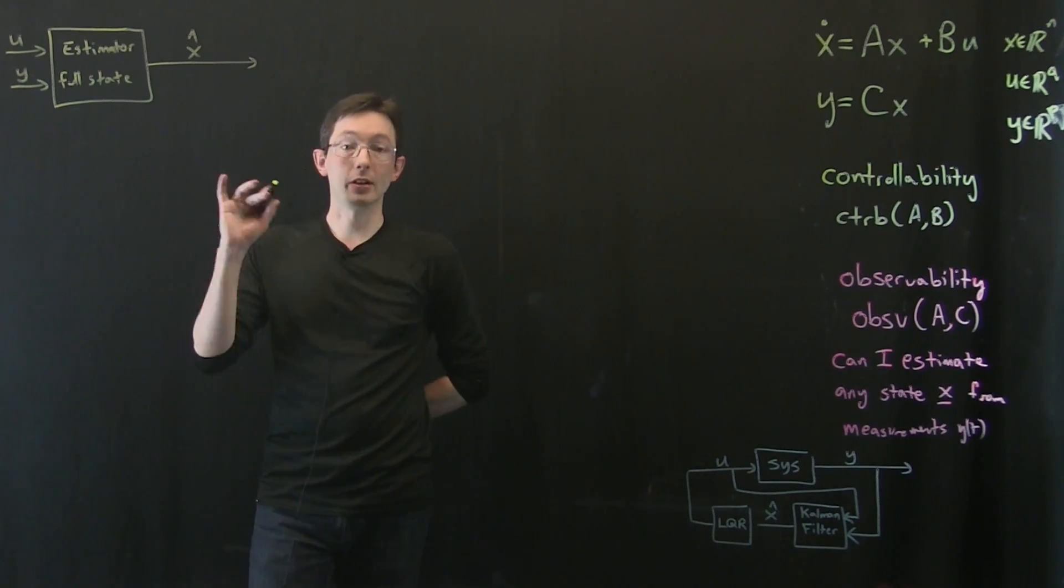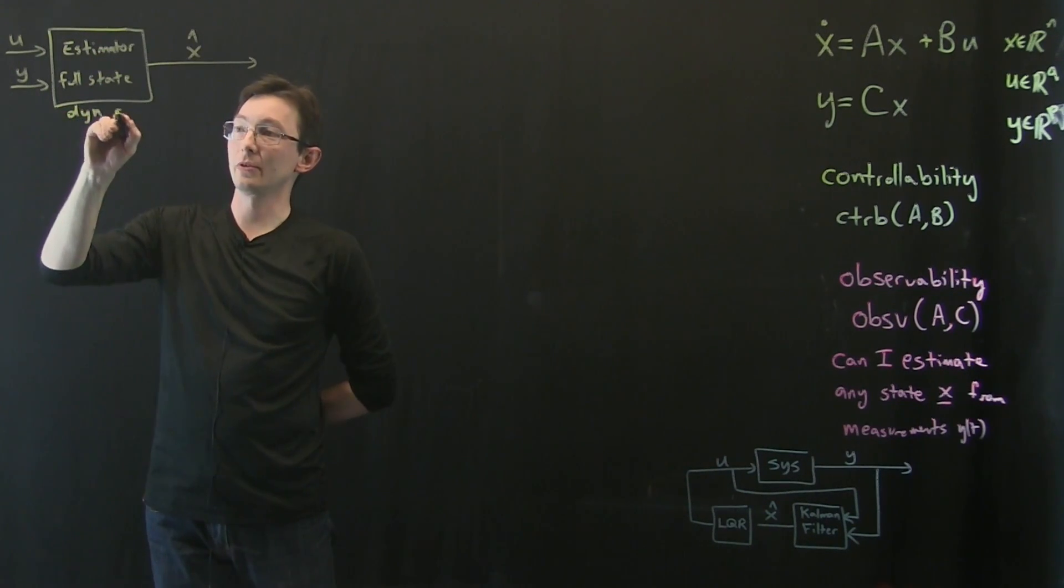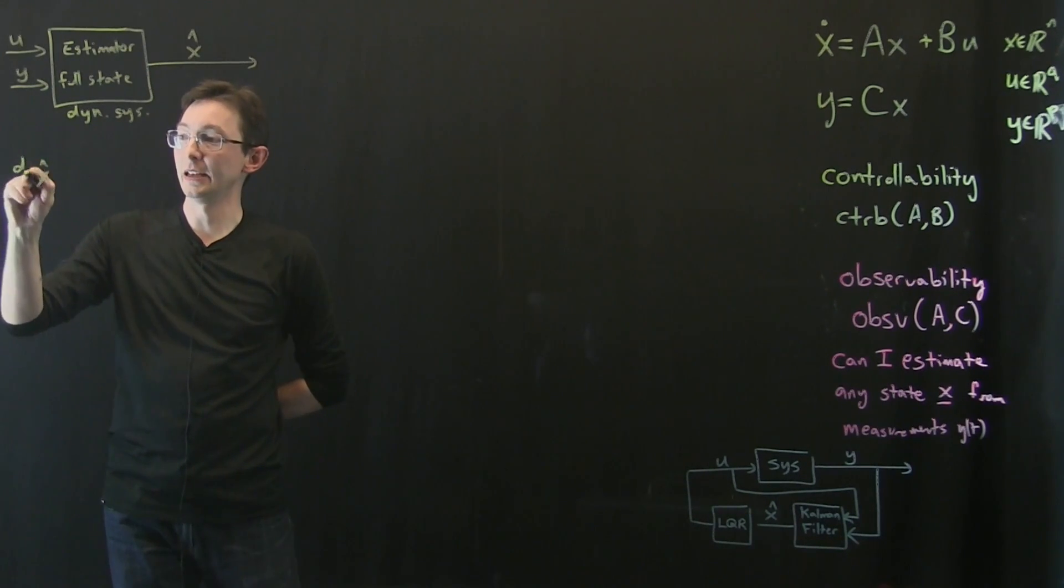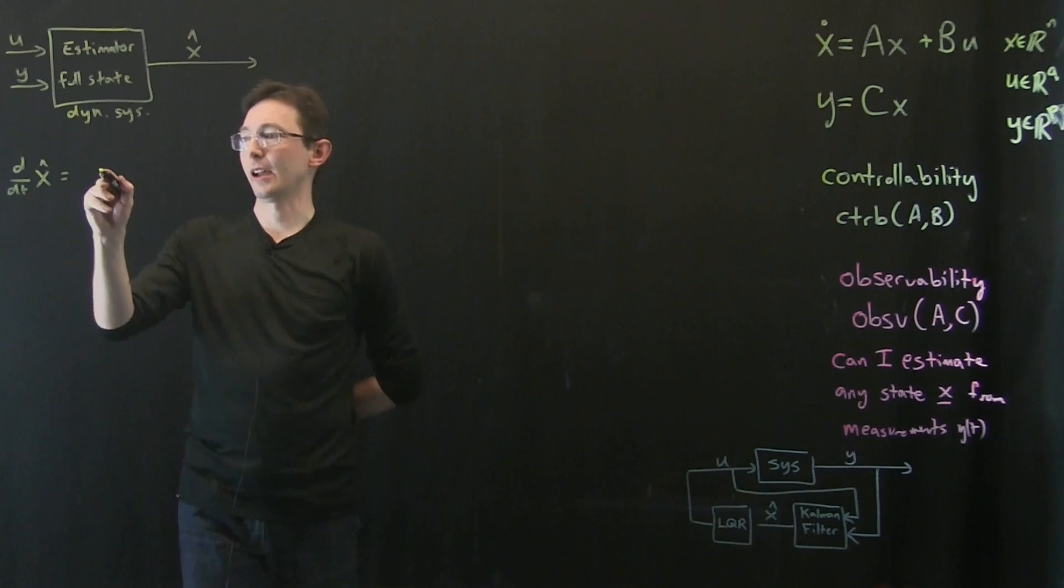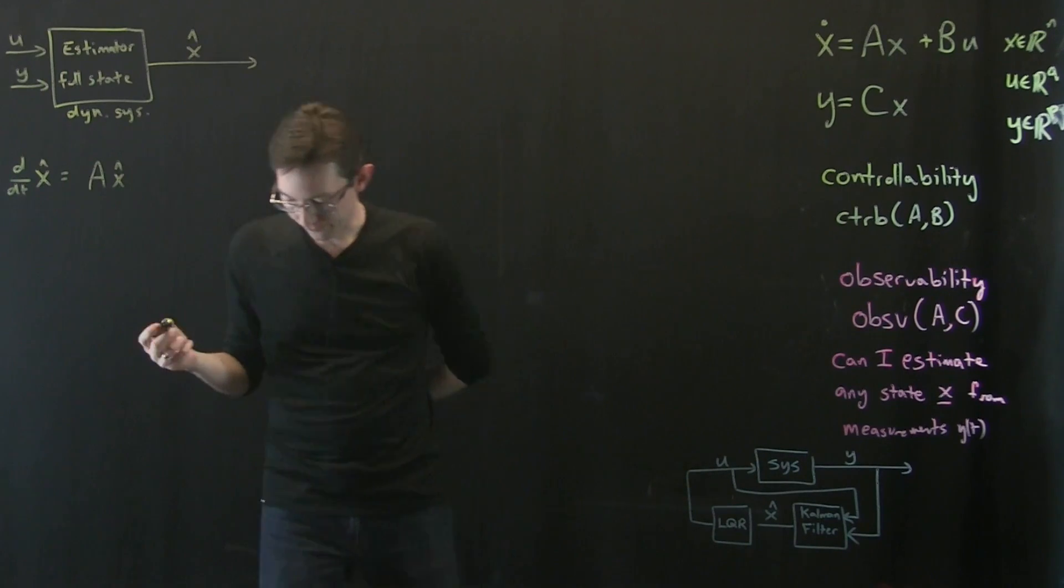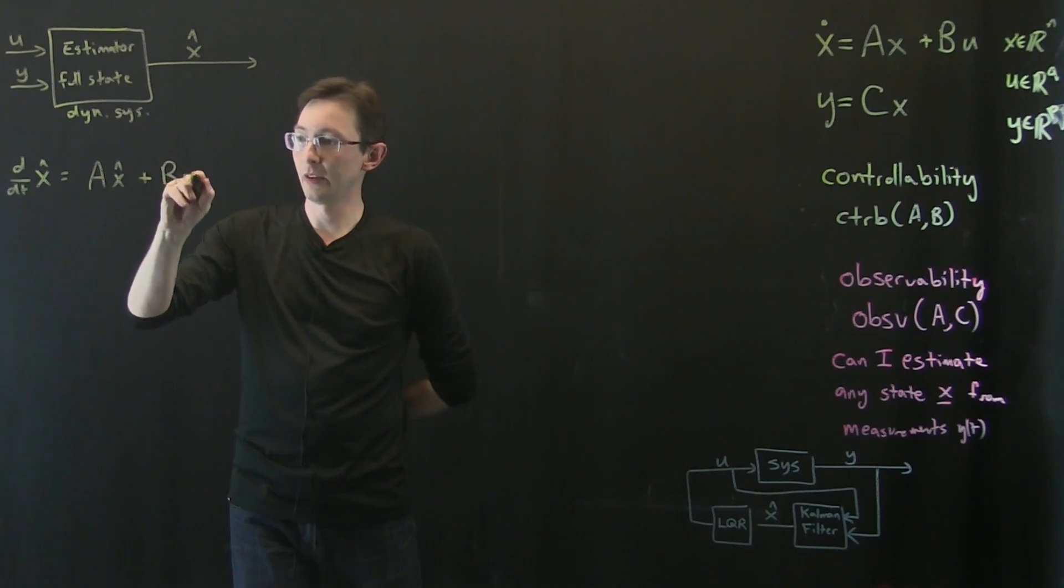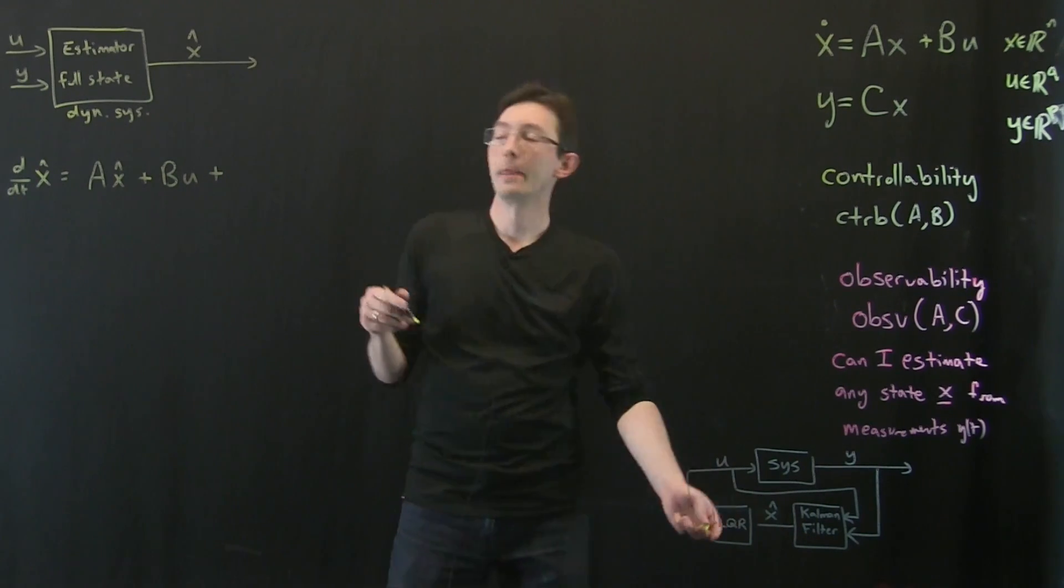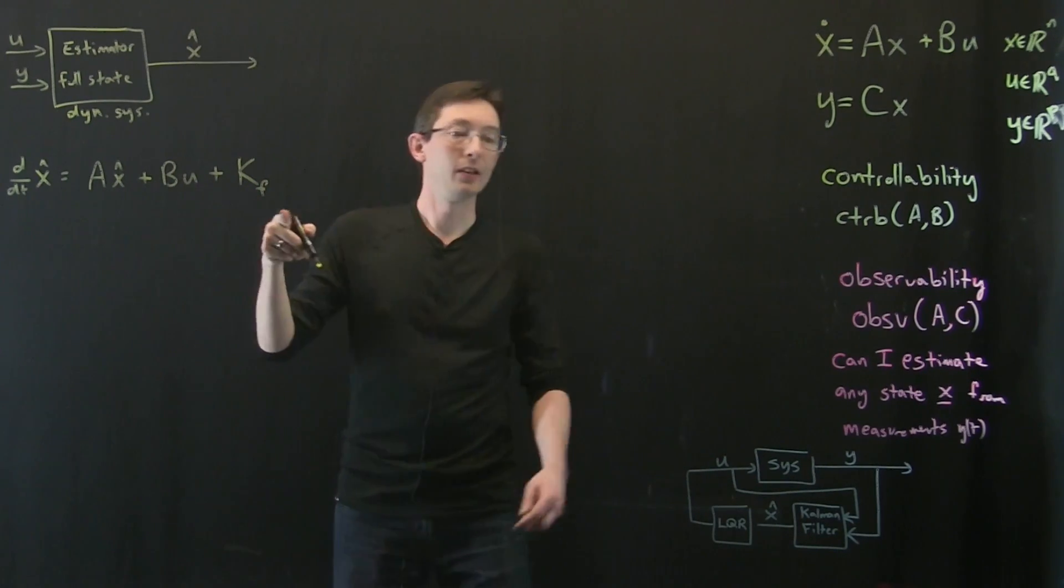First things first, I'm just going to write down the system of this estimator. This is itself a dynamical system, a linear dynamical system. DDT of X hat is going to equal A of X hat, and then the inputs - I've got this U and Y, so I'm going to have plus BU, and plus, remember how I had that gain matrix for my LQR? I'm also going to have a gain matrix for my filter or my estimator, so K sub F for Kalman filter.